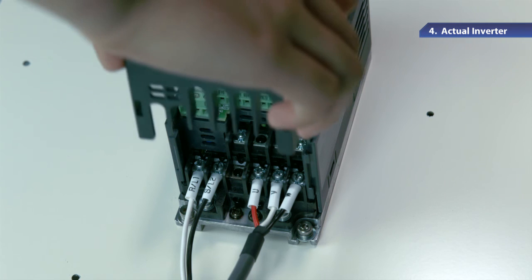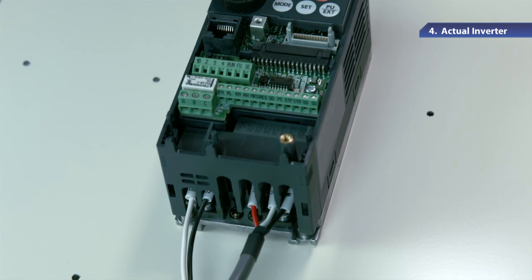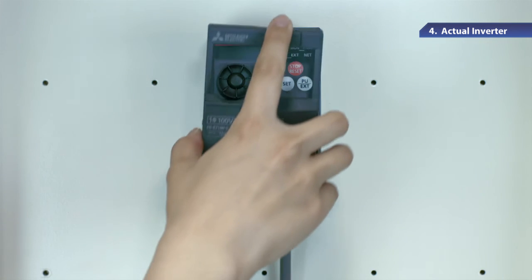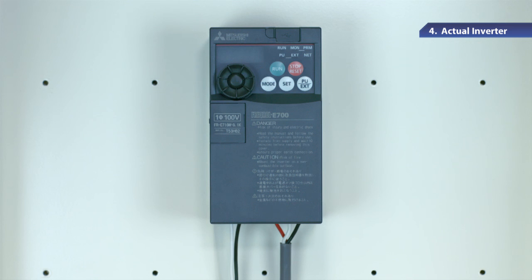Next, attach the comb-shaped wiring cover. Make sure to keep one motor wire between the teeth of the wiring cover and to fit the cover to the inverter along the guides. Attach the front cover straight to the front of the inverter body. Now the inverter is ready to use.